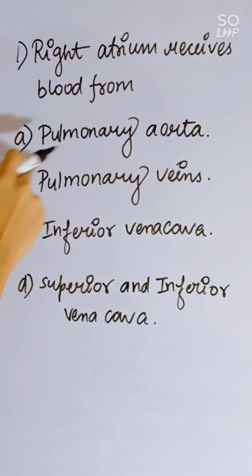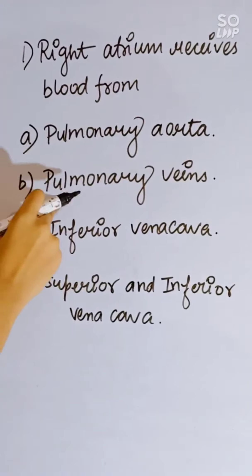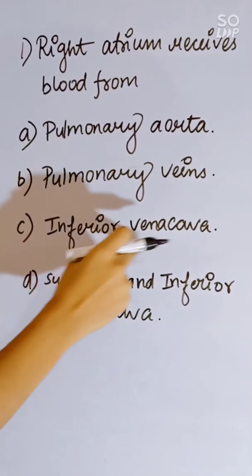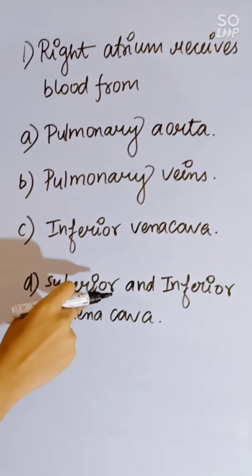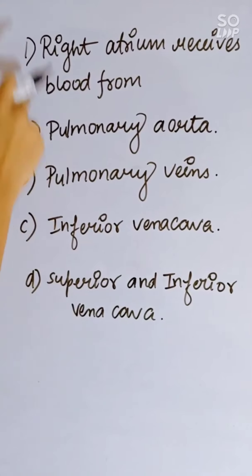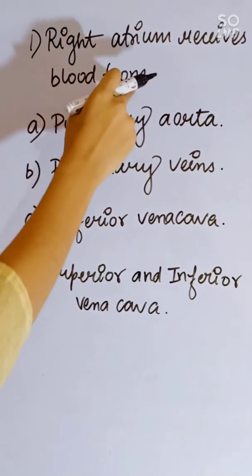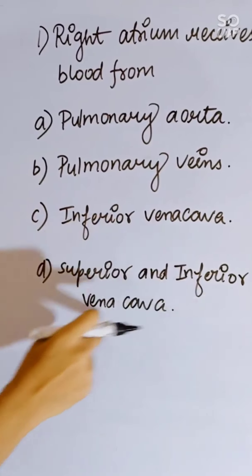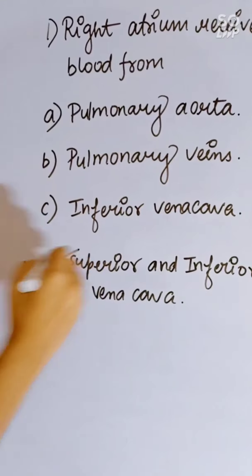Which vessel carries blood into the right atrium? Options: pulmonary aorta, pulmonary vein, inferior vena cava, or superior and inferior vena cava. The right atrium receives blood from the superior and inferior vena cava. Correct answer is D.